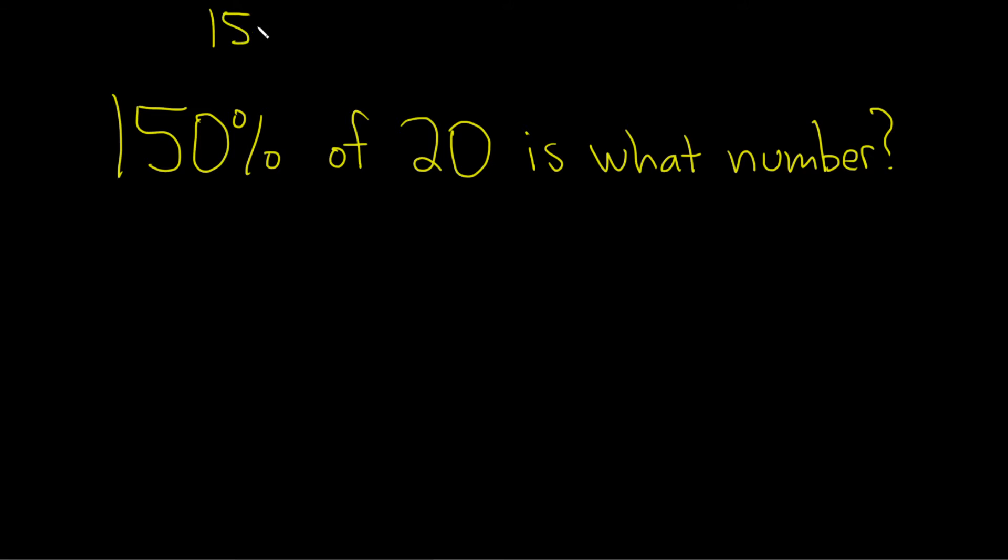Keep in mind, when you look at 150%, the decimal is right here at the very end. So to convert it into a pure decimal, you take this decimal and you move it to the left two times. So 1, 2, and then you put a dot.